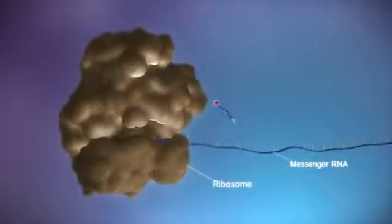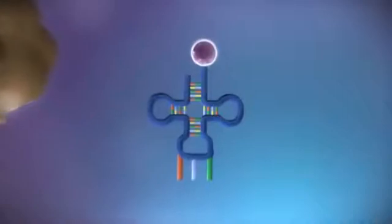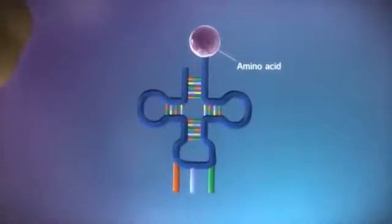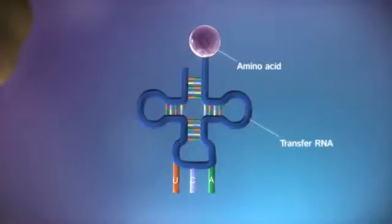The ribosome reads the code in the messenger RNA to produce a chain made up of amino acids. There are 20 different types of amino acid. Transfer RNA molecules carry the amino acids to the ribosome.